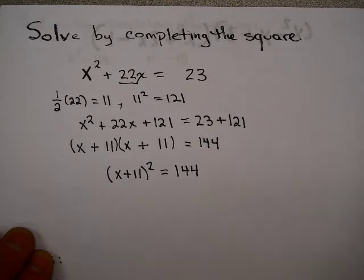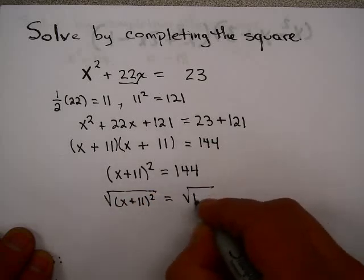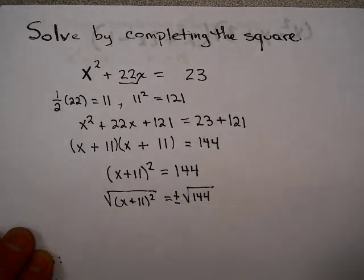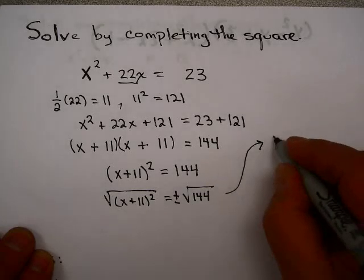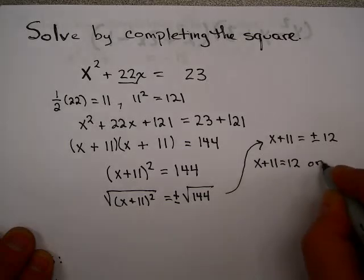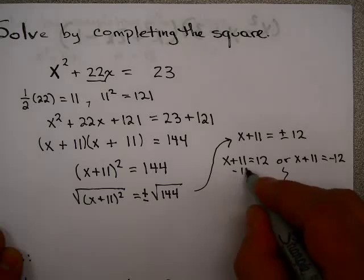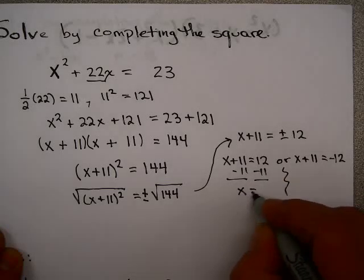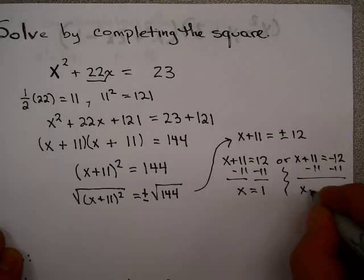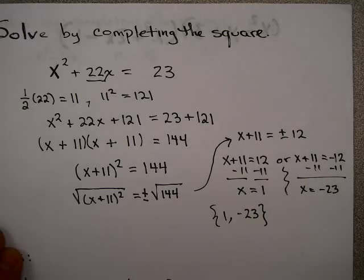We can use the square root property: take the square root of x plus 11 squared, and take the square root of 144. Don't forget your plus or minus. That gives you x plus 11 equals plus or minus 12. So there are two solutions: x plus 11 equals 12, giving x equals 1; and x plus 11 equals minus 12, giving x equals minus 23. So your solutions are 1 and negative 23.